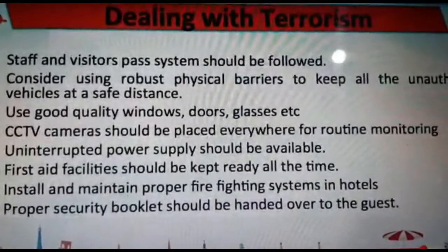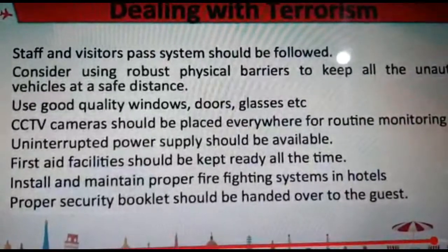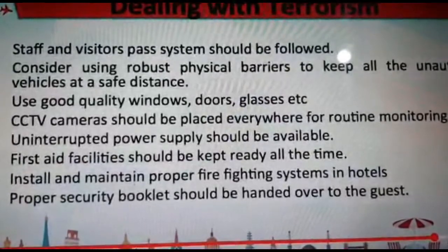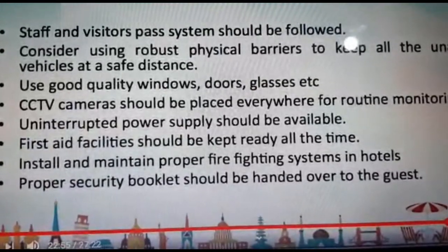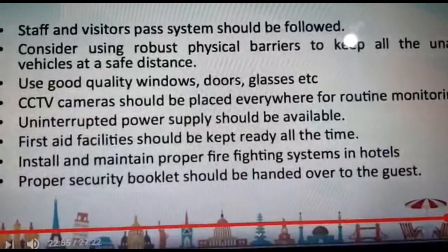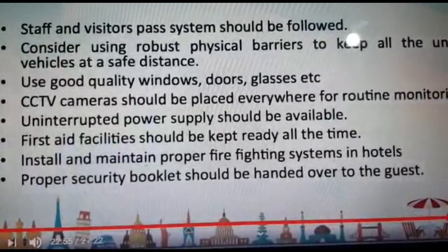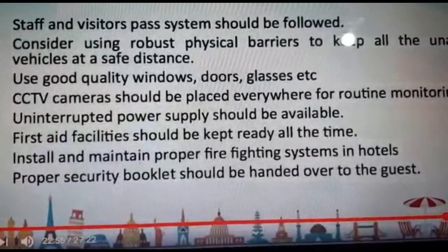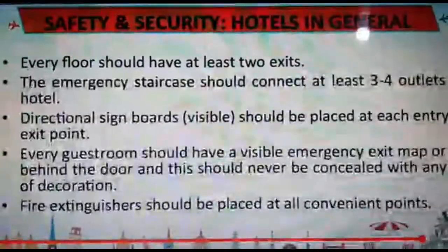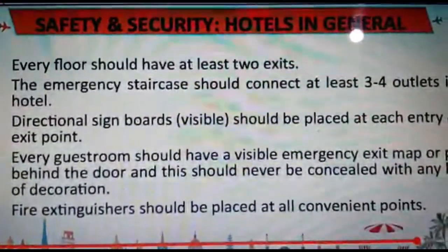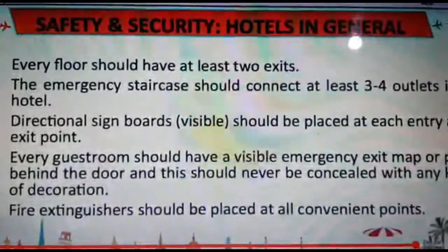A staff and visitors pass system should be followed. Consider using robust physical barriers to keep unauthorized vehicles at a safe distance. Use good quality windows, doors, and glasses. CCTV cameras should be installed and regularly monitored. Uninterrupted power supply should be available. First aid facility should be kept ready at all times. Install and maintain a proper firefighting system. A proper security booklet should be provided to and briefed to the guest. With this, section 9 concludes our chapter on safety and security in hotels, which is unit 5.